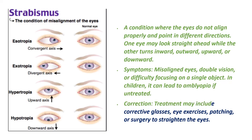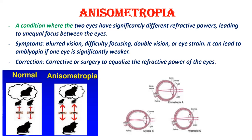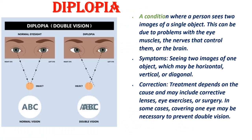Anisometropia: A condition where the two eyes have significantly different refractive powers, leading to unequal focus between the eyes. Symptoms include blurred vision, difficulty focusing, double vision, or eye strain. It can lead to amblyopia if one eye is significantly weaker. Corrective lenses — glasses or contact lenses — or surgery to equalize the refractive power of the eyes can be helpful.